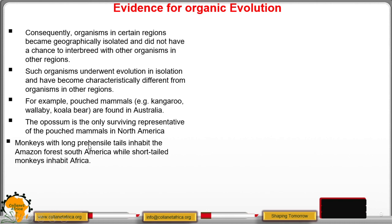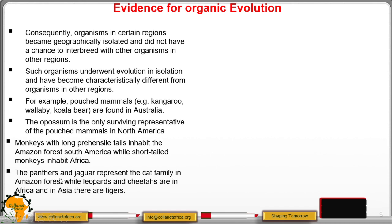Monkeys with long prehensile tails inhabit the Amazon forest in South America while the short-tailed monkeys inhabit Africa. We also have the panthers and the jaguar representing the cat family in Amazon forest. Leopards and cheetahs occupy Africa and in Asia there are tigers. So this is geographical distribution. We have panthers and jaguar in Amazon forest, these panthers and jaguar cannot be seen in Africa. There are no tigers in Africa. They are only found in Asia. So this shows how organisms were distributed in different places and that is what we call geographical distribution of organisms.